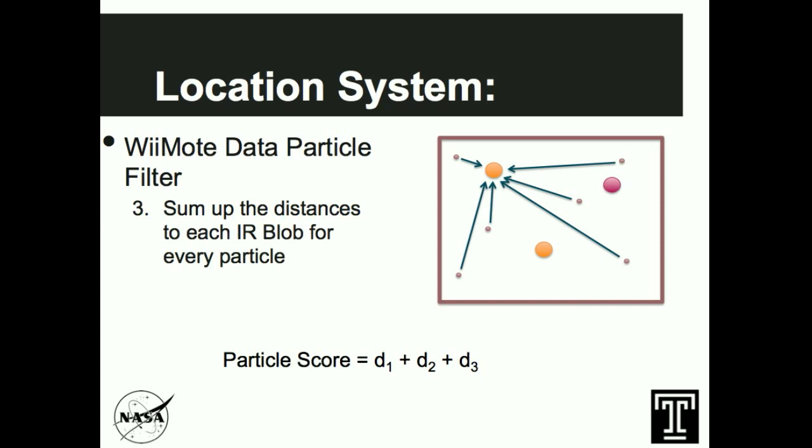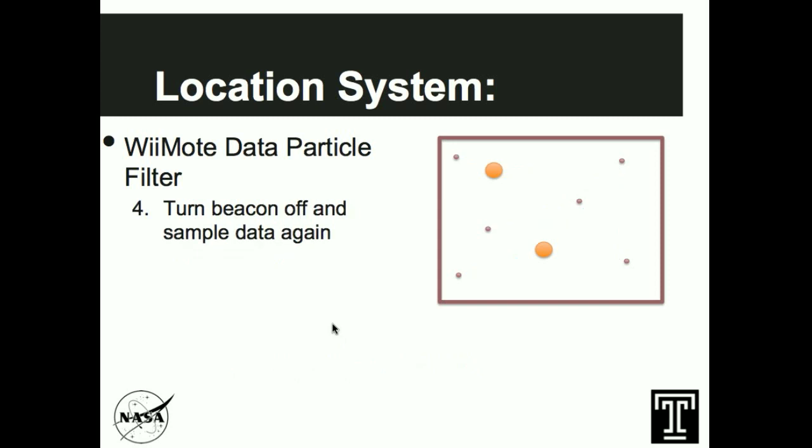The next thing that we do is sum up the distances for each IR blob that we have found to every single particle, and then that is going to make up what the particle score is. I've got six of my imaginary particles here, but in actuality there's going to be a hundred particles on the screen. The particle score for this part of the iteration is going to be the distance to the first IR blob plus the distance to the second IR blob plus the distance to the third IR blob. We have to calculate this a hundred times, and in this situation because we have three blobs, we would have to calculate that distance 300 times and then sum that all together for each particle.